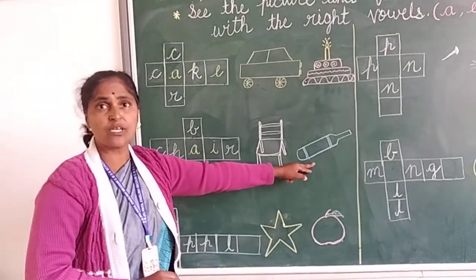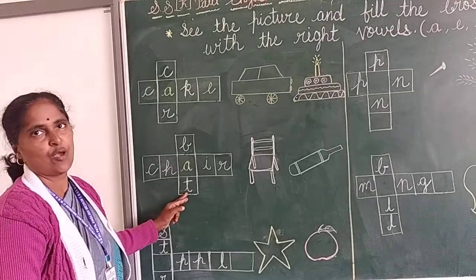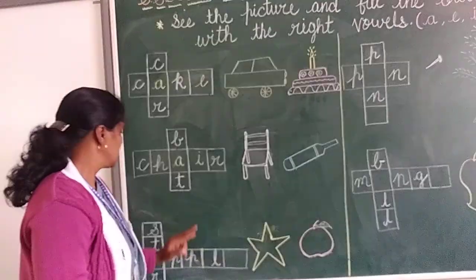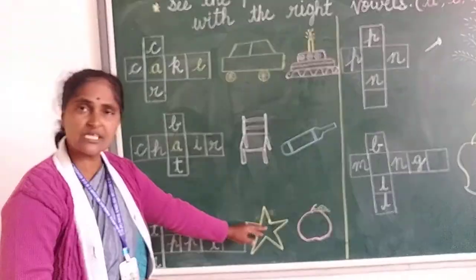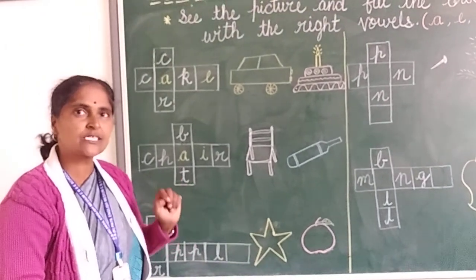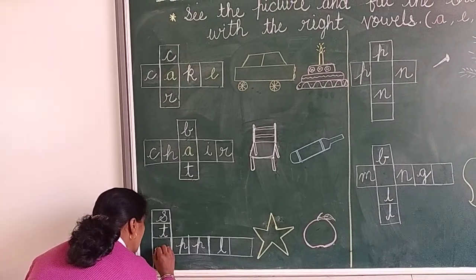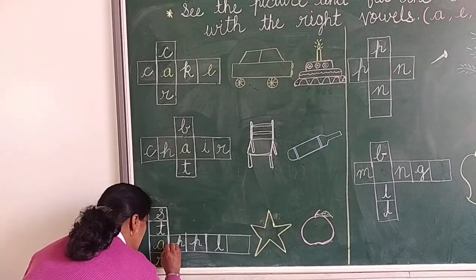See now, this is a bat. What is the spelling of bat? B-A-T. Bat. Next, what is this? Star. What is the spelling of star? S-T-A-R. Star.